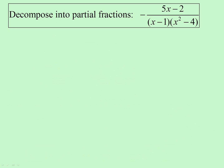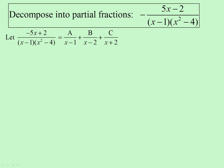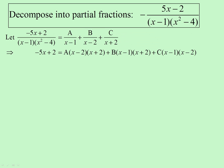Let's look at another example. This one now has three factors — x squared minus 4 becomes x minus 2 times x plus 2. So now we have A, B, and C — all capitals. Find the common denominator and drop the denominator to equate numerators.